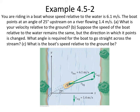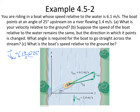Let's lay out what our various vectors are. We've got a boat moving through water, and so the velocity of our boat with respect to the water is going to be 6.1 meters per second. But it's also pointed at a certain angle — 25 degrees upstream. If upstream is north and we have our x and y axis, we can say it's 25 degrees north of east.